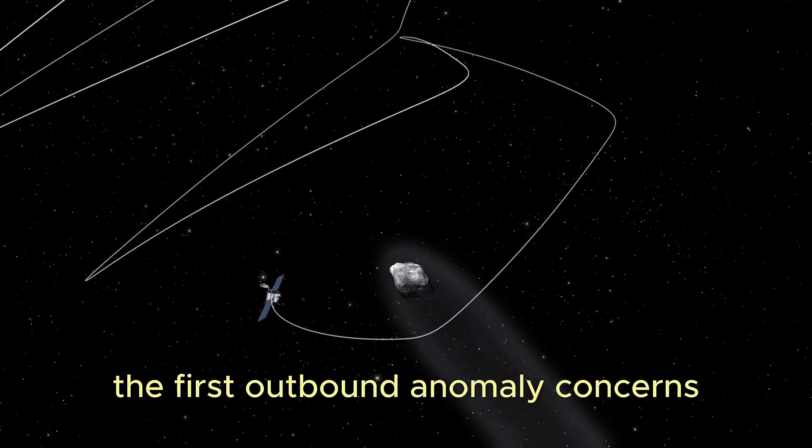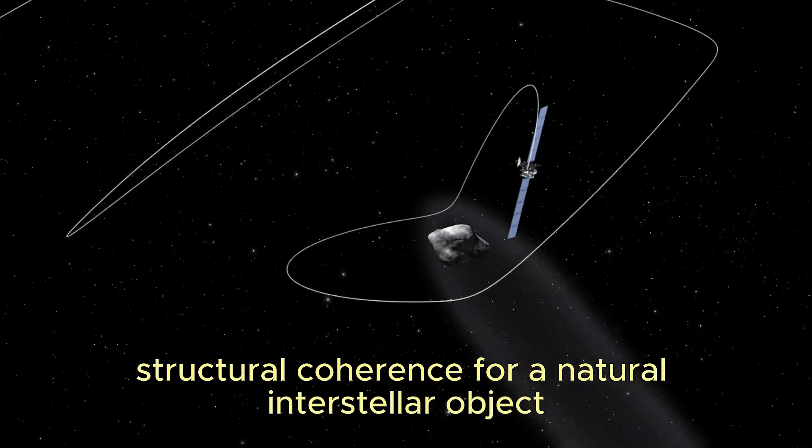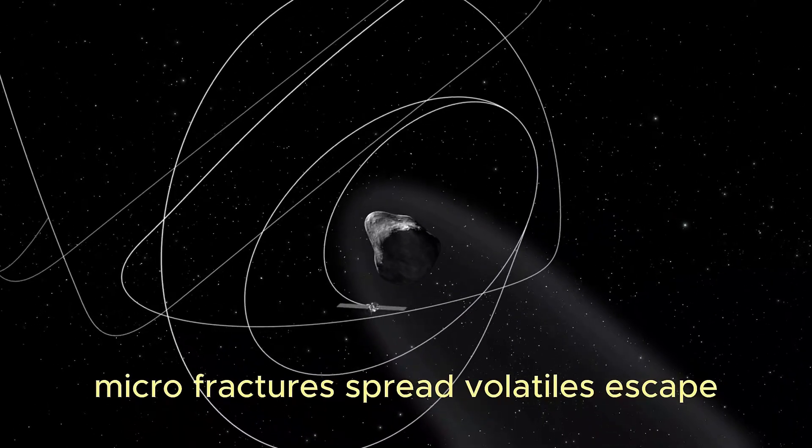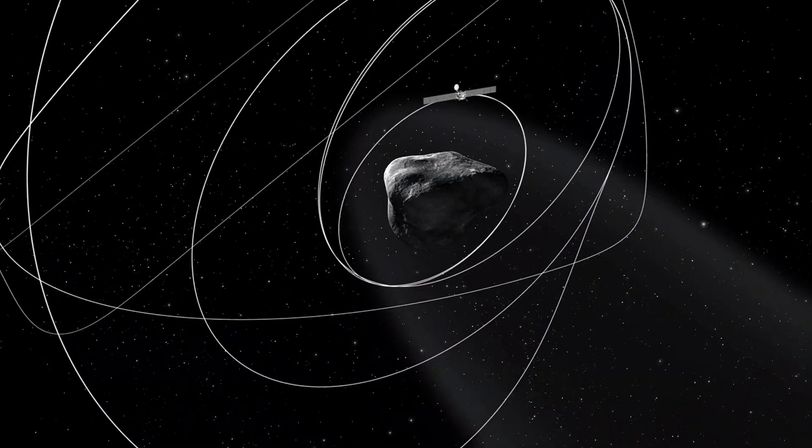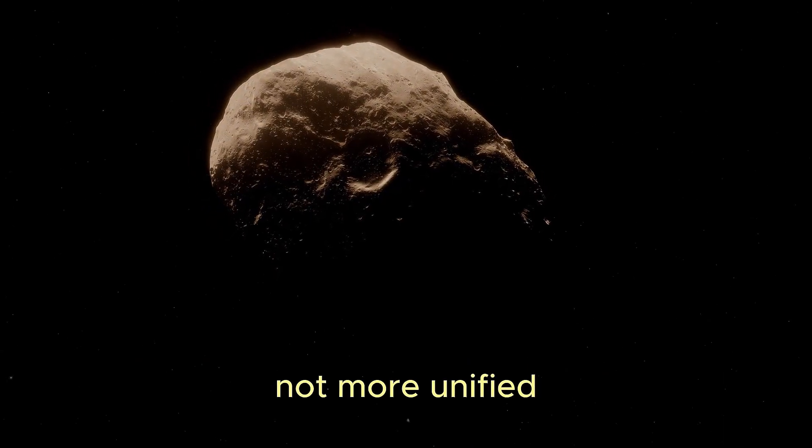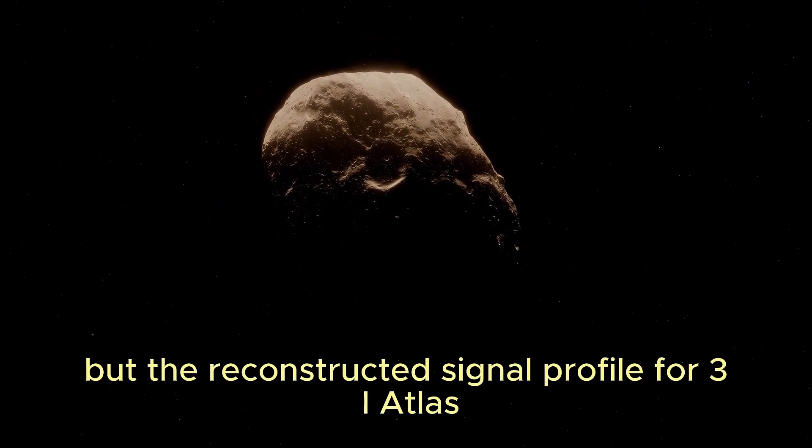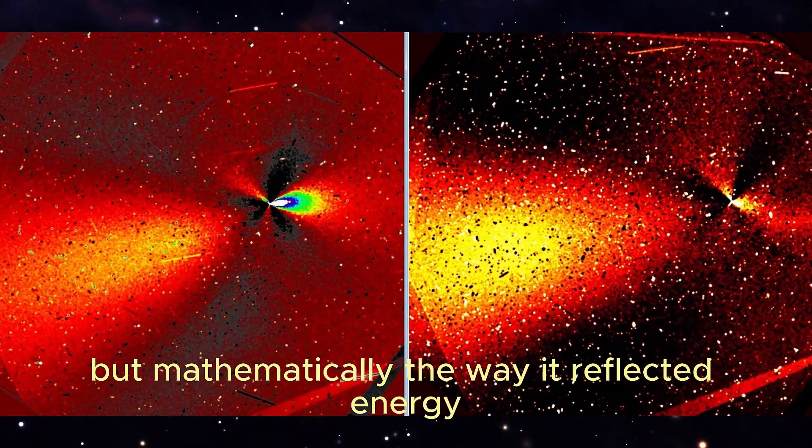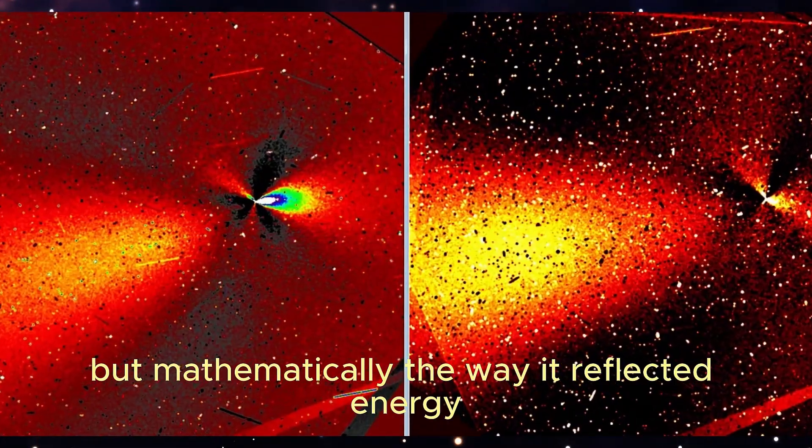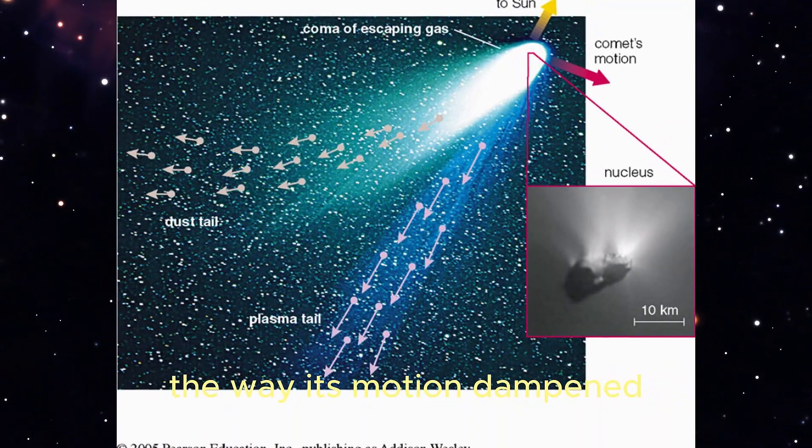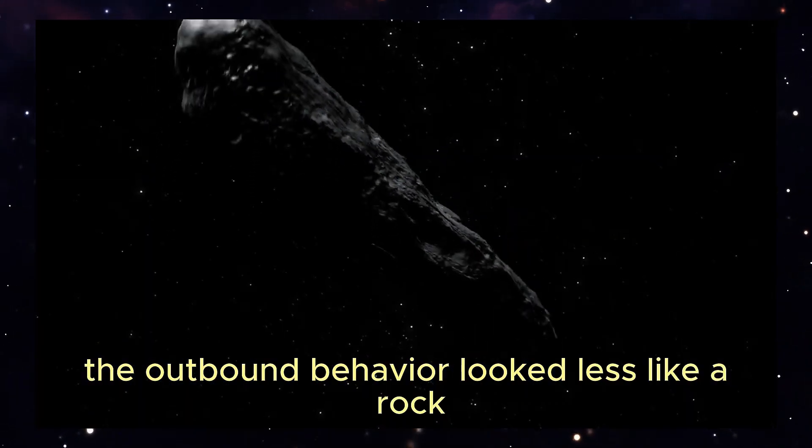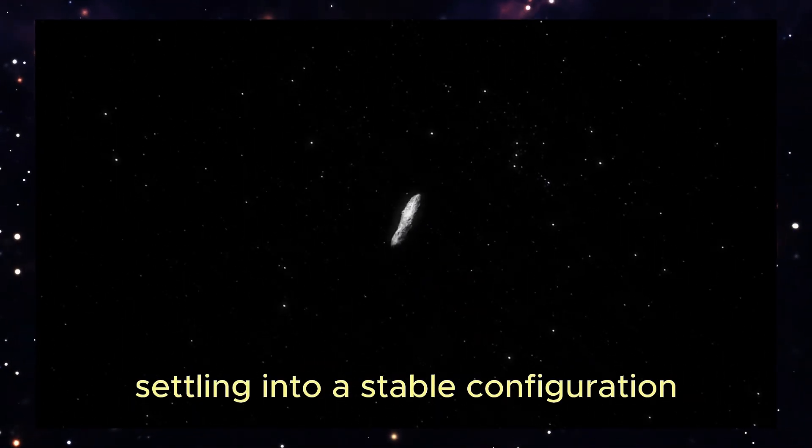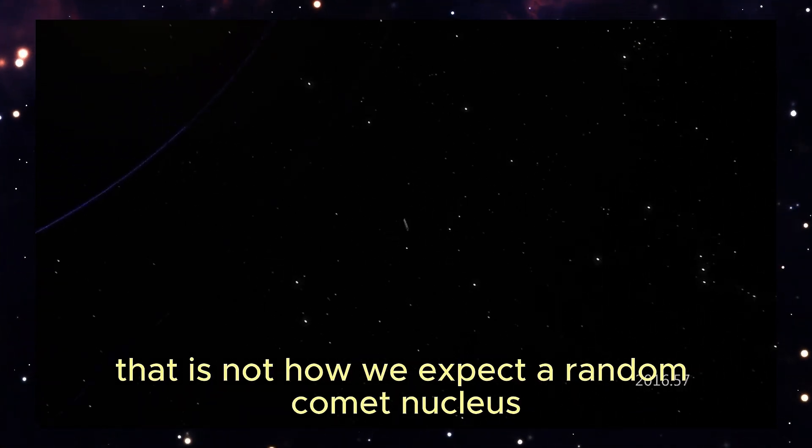The first outbound anomaly concerns structural coherence. For a natural interstellar object, the expectation is simple. Over time, it becomes less organized. Microfractures spread, volatiles escape, internal stresses leave the body more disordered, not more unified. But the reconstructed signal profile for 3I Atlas suggests the opposite trend. Not visually, this isn't about sharp new images, but mathematically. The way it reflected energy, the way tiny forces seemed to affect it, the way its motion dampened instead of becoming more chaotic. The outbound behavior looked less like a rock slowly falling apart and more like a system settling into a stable configuration.